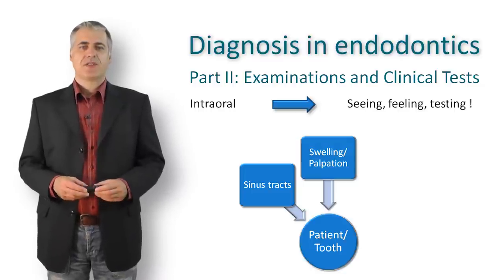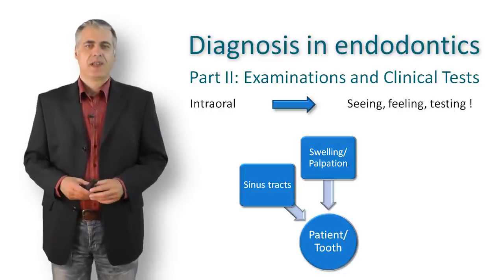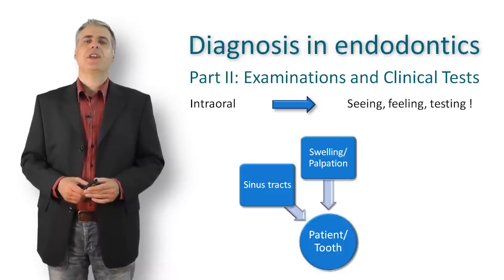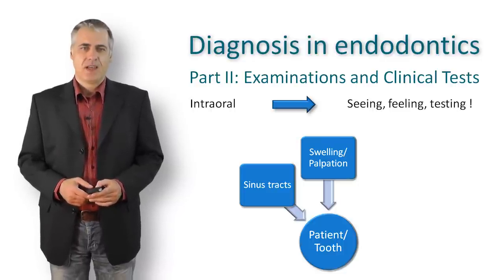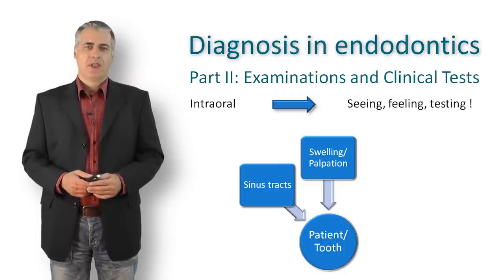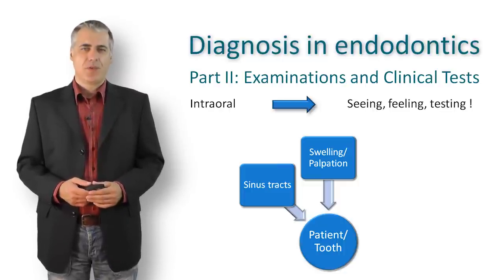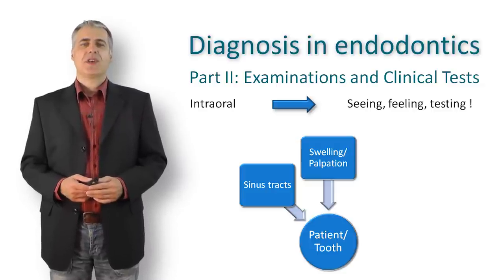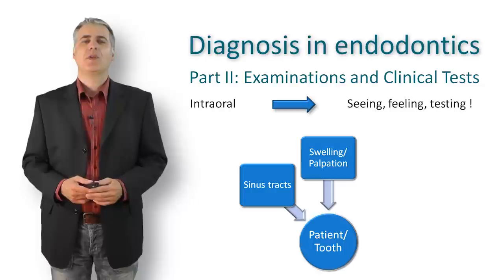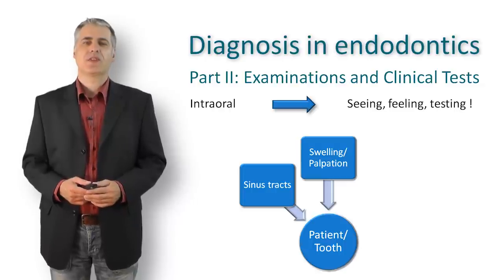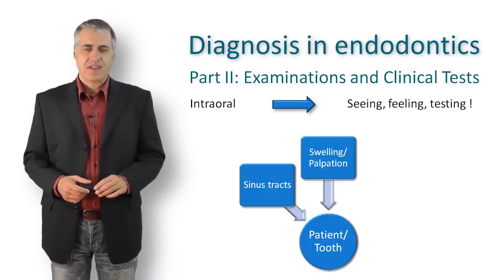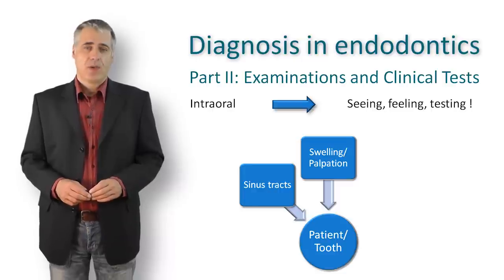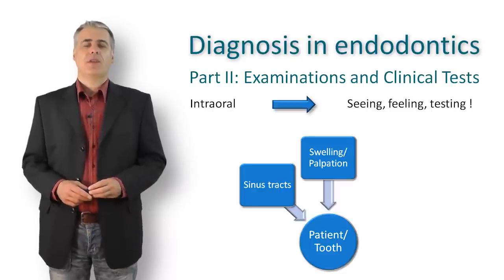When you see an intra-oral sinus tract, it is in most cases a sign of infection of the periapical tissue as a result of an endodontic problem. Such a sinus tract can be very helpful to identify the problematic tooth: with the help of a gutta-percha cone inserted into the sinus tract, the cone will follow the sinus to its origin. In most cases it will point to the involved tooth or at least near it, which can be confirmed on the radiograph.